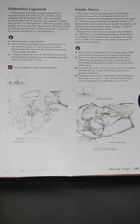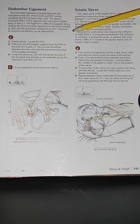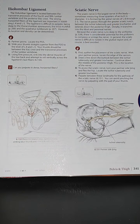The strong horizontal fibers of the ligament are important in stabilizing L4 and L5. The ligament is difficult to palpate, being deep to the thoracolumbar aponeurosis, the thick multifidi, and the quadratus lumborum. However, its location and density can be determined. With your partner in prone, locate the PSIS.